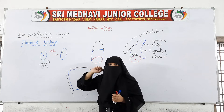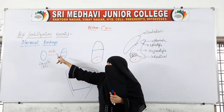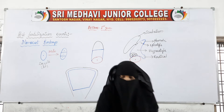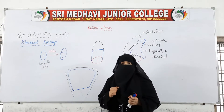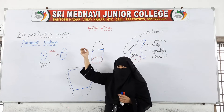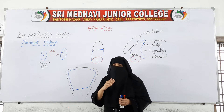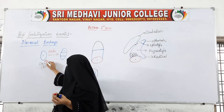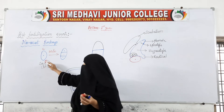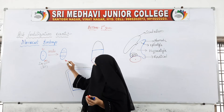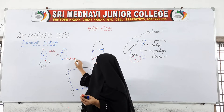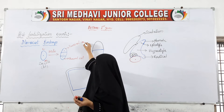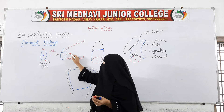The zygote will undergo mitotic cell division and produce three cells. In the dicot embryo, the zygote divided and formed two cells — the basal cell and the terminal cell. Here in the monocot, this is the micropylar end and this is the chalazal end. At the micropylar end will be the basal cell, at the chalazal end will be the terminal cell, and in between is the middle cell.